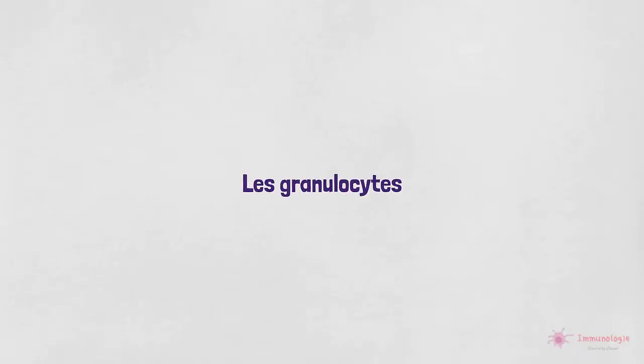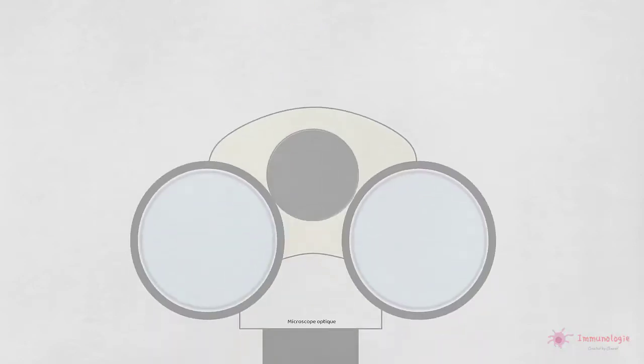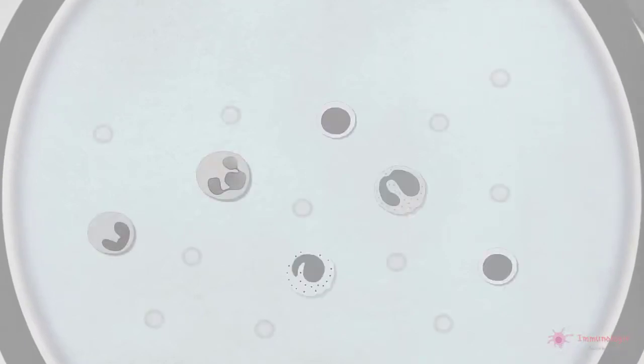Les granulocytes. Historiquement, les chercheurs classaient les cellules en fonction de leur apparence au microscope, souvent à l'aide de colorants.